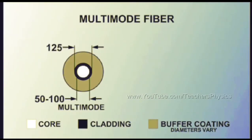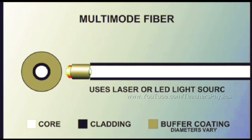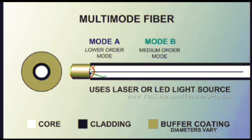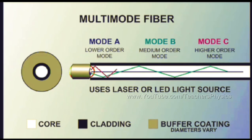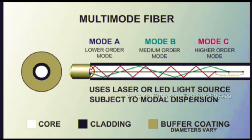Multimode fiber has a large core diameter of 50 to 100 microns; the most commonly used sizes are 50 or 62.5 microns in diameter. Multimode fiber can use either laser or LED light sources. The larger numerical aperture allows light waves to enter the core at a variety of angles. Light entering near 0 degrees is a lower-order mode; as the entering angle deviates from 0 degrees, the order of the mode increases. Higher-order modes strike the cladding more frequently as they travel down the core, taking longer to reach their destination. This timing difference between higher and lower modes creates modal dispersion and degrades system performance, so multimode fiber is mostly used for data transmission over shorter distances.